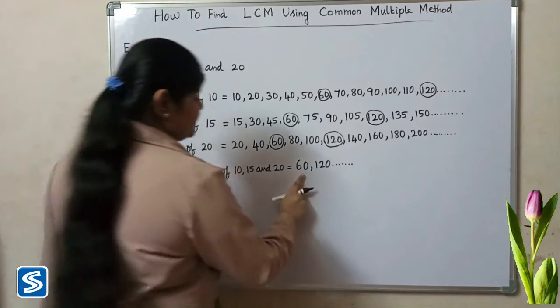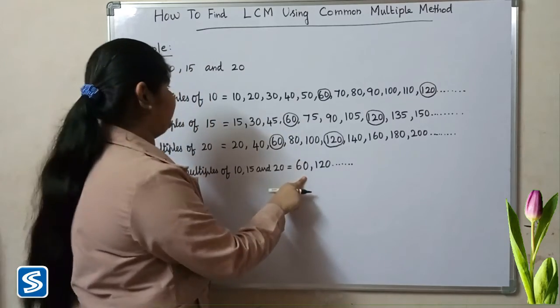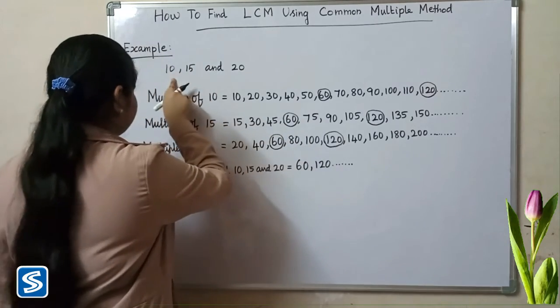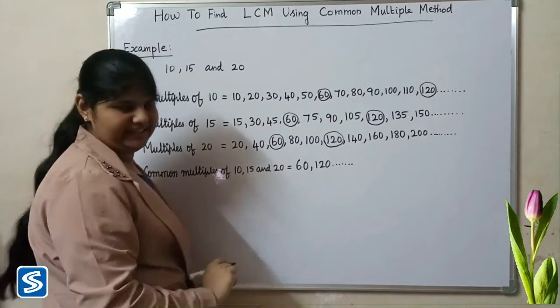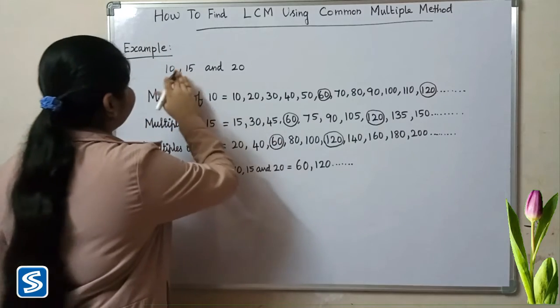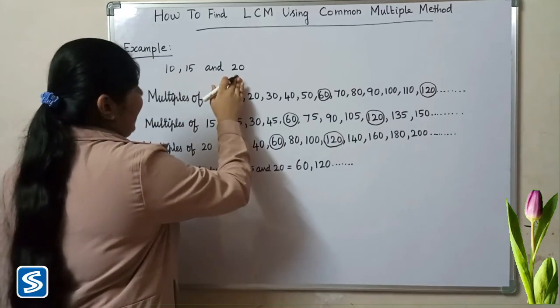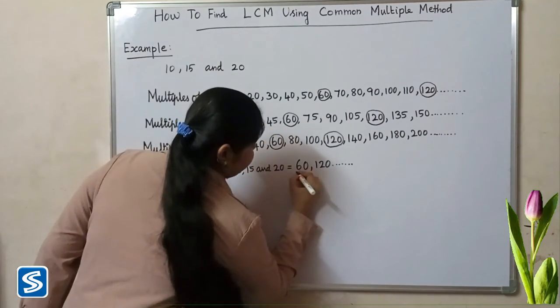Here, 60 is the smallest common multiple which is divisible by 10, 15, and 20. So, LCM of 10, 15, and 20 is 60.